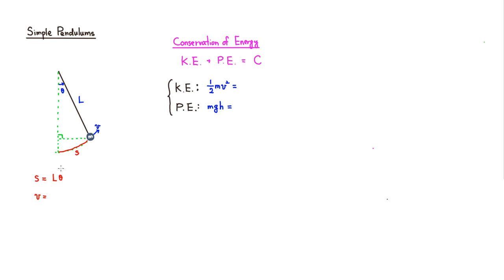The velocity can be expressed as a derivative. We can take the derivative of the arc length s with respect to time t. Since s is l·theta, and l is just a length — so it's just a constant — we can take the derivative of theta with respect to t. So v can be written as l times dθ/dt.